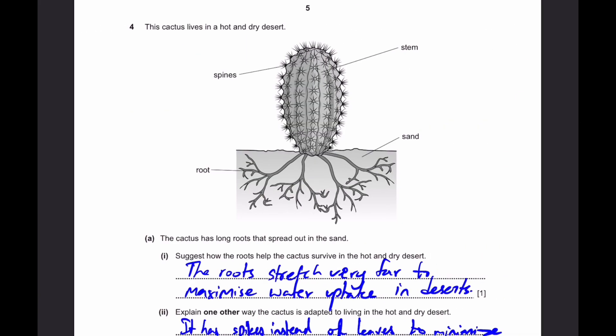Question 4. This cactus lives in a hot and dry desert. The cactus has long roots that spread out in the sand. Suggest how the roots help the cactus survive in the hot and dry desert. The roots stretch very far to maximize water uptake in deserts. Why though? Because deserts are obviously very hot, and water can evaporate very easily. So the roots stretch out very far and wide so that they're able to get the most amount of water. Because there's already limited water there, you can't get any that easily from water vapor entering the leaves. So, it's best to simply maximize the area which is covered by roots, so the water uptake is highest.